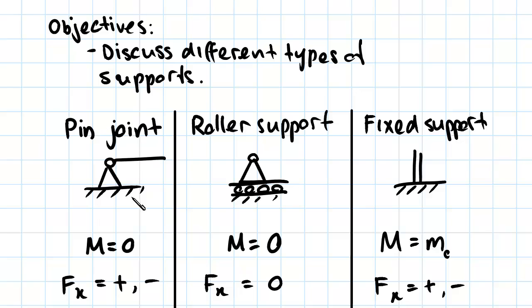What this means is that this joint cannot support a moment, so the moment at one of these joints is always going to be equal to zero. That's a really important concept.